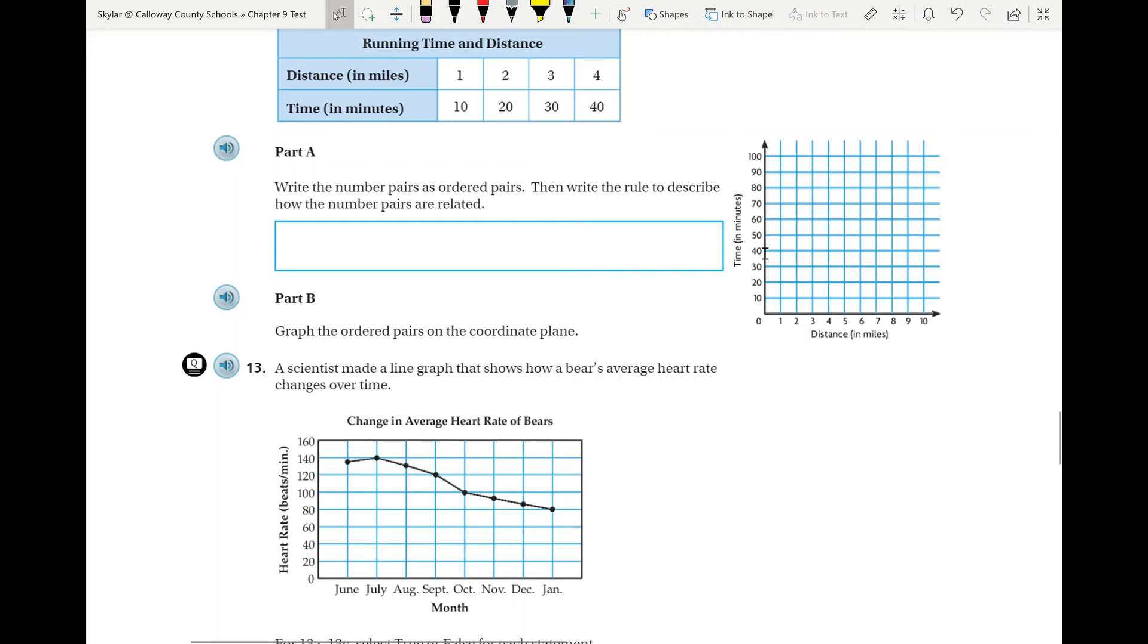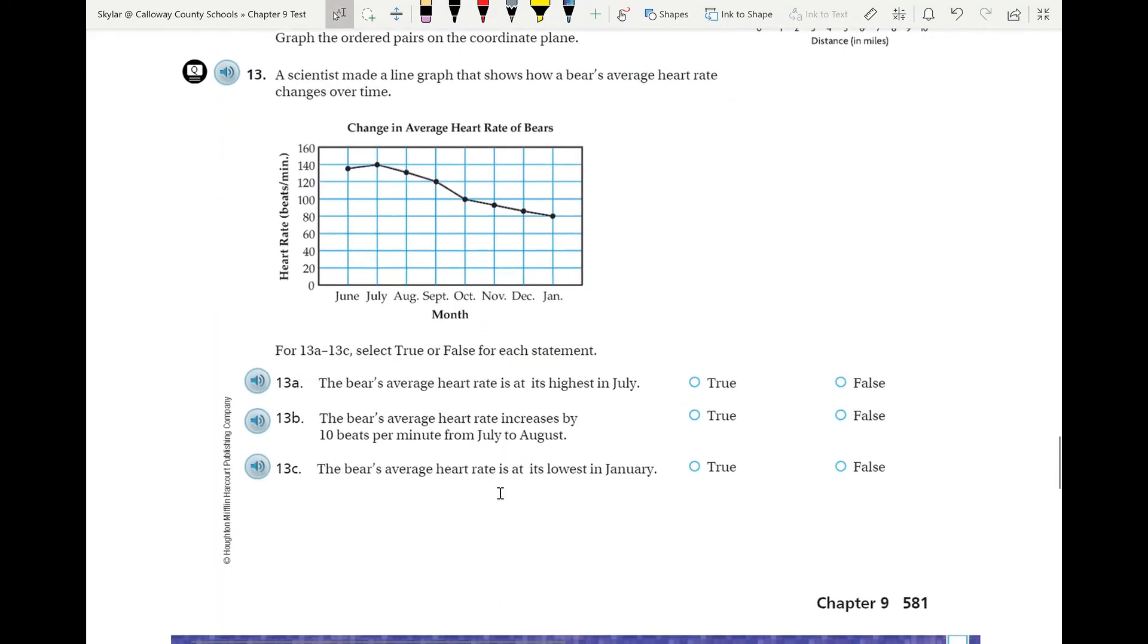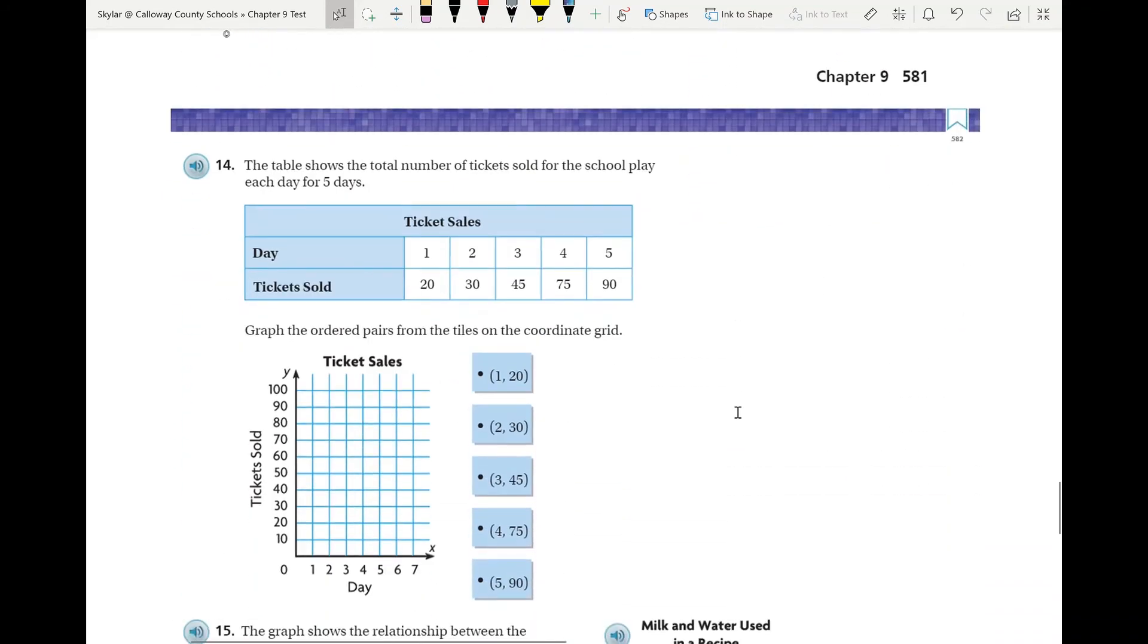Number 13: a scientist made a line graph. Just need to analyze that line graph. Be very careful when you're doing it to say if these things are true or false. Very confident in you all for that one.